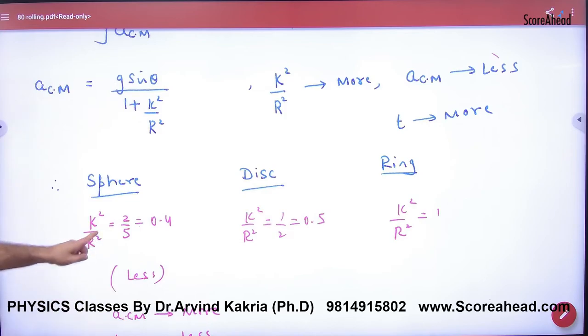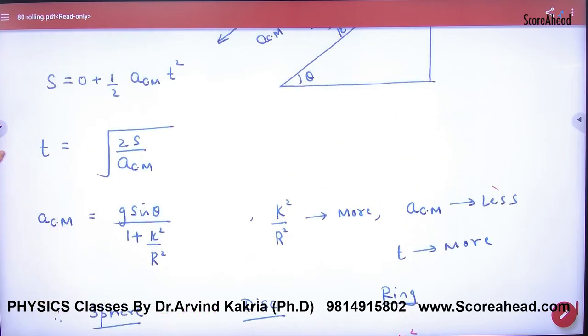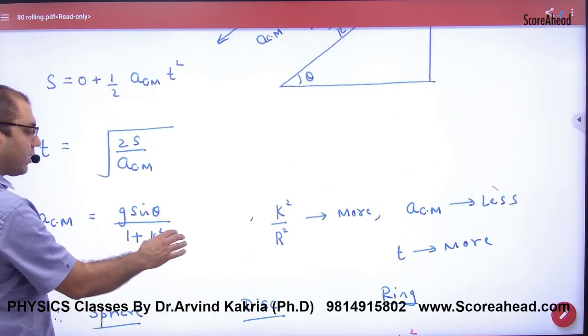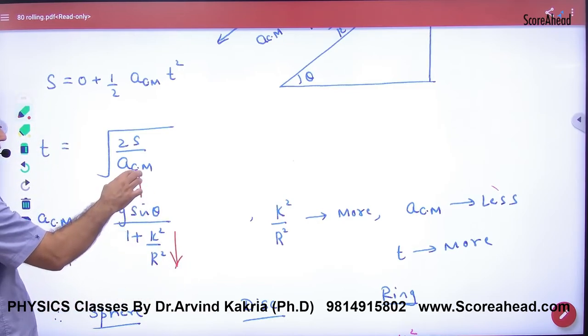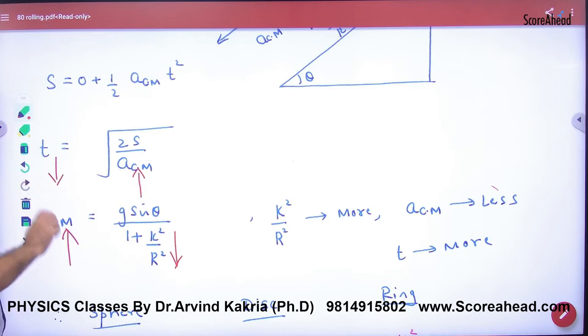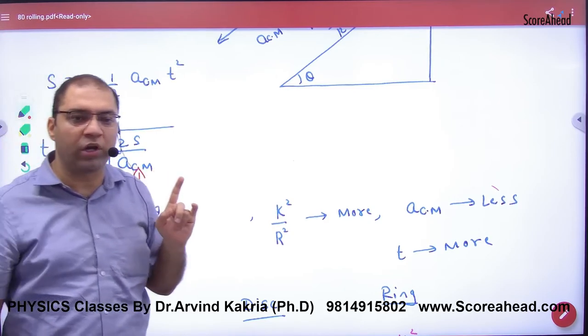Now if k² by r² will be less, the acceleration will be more. The acceleration will be more, the time will be less. Which will be the least? Solid sphere. How do you think?